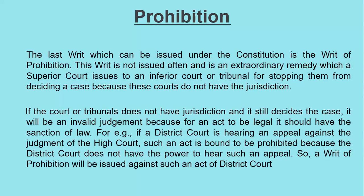If the court or tribunal does not have jurisdiction and it still decides the case, it will be an invalid judgment, because for an act to be legal it should have the sanction of law. For example, if a district court is hearing an appeal against the judgment of a high court, such an act is bound to be prohibited because the district court does not have the power to hear such an appeal. So a writ of Prohibition will be issued against such an act of the district court.